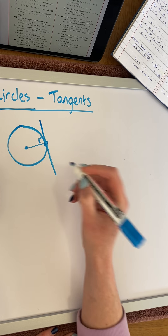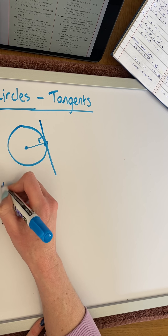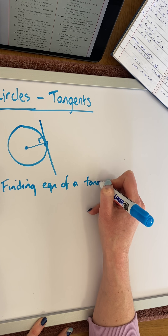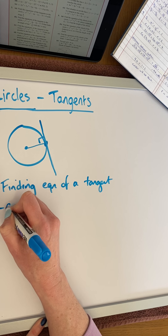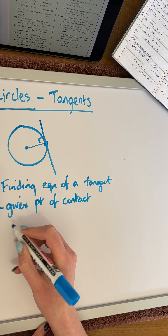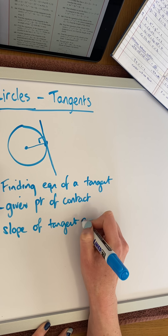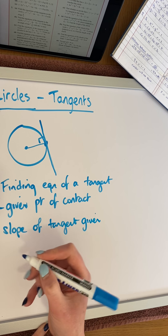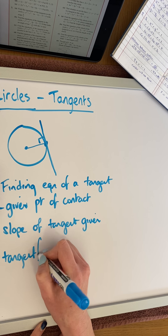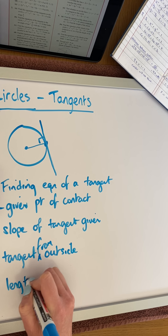The types of questions we're going to look at in this video: number one, finding the equation of the tangent when we are given a point of contact; second, when we are given the slope of the tangent; third, finding a tangent when we are given a point outside the circle; and lastly, finding the length of a tangent.